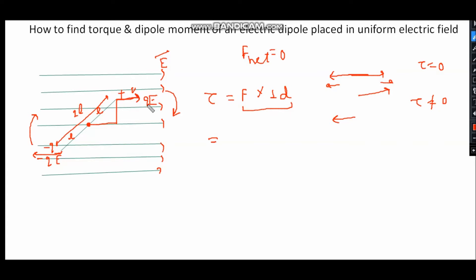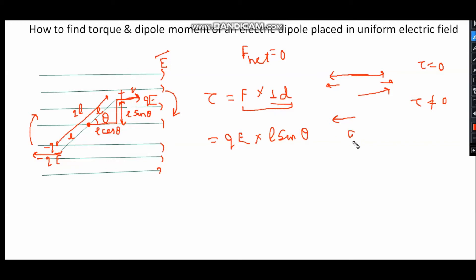For force qE, F is equal to qE and the perpendicular distance is equal to this length. If this angle is theta — meaning the dipole is making angle theta with the electric field — then this length is L sin theta, because the two components of L are: the horizontal component L cos theta and the vertical component L sin theta. So this perpendicular distance is L sin theta.